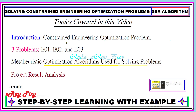This video is based on constraint and sharing optimization problems. Here we have three different constraint and sharing optimization problems, and we will use different optimization algorithms to find the optimal solution for each problem. After that we will compare the results and select the best algorithm that provides the better solution in the minimum number of evaluations, and then we have the code.